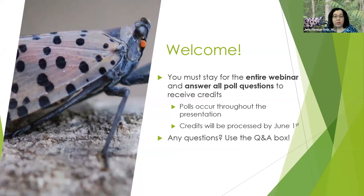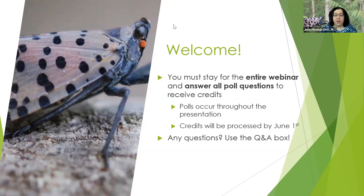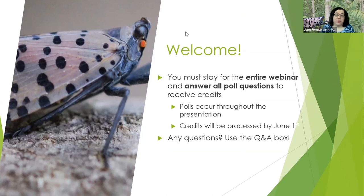The polls are going to occur throughout the presentation, so you don't want to step away because you might miss one. I am going to try really hard to process all of the credits by June 1st, and I would just ask that you not email to ask about them until June 1st, because the more emails I get asking, the less time I have to process the credits. And just one more reminder — if you have any questions, please use the Q&A box.